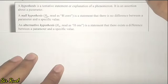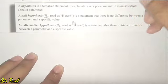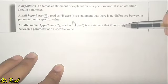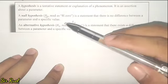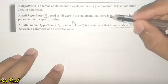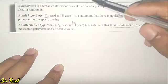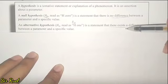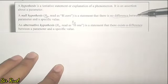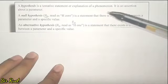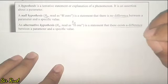Then we have the alternative hypothesis, or H1. In other books, they use HA, so you may encounter that someday. It is a statement that there exists a difference between a parameter and a specific value. As you can observe, the two hypotheses contradict each other. When the null hypothesis says no difference, the alternative says there exists a difference. When null says no change, alternative says there is a change. When null says no relationship, alternative says there exists a relationship. They are always contradicting each other.